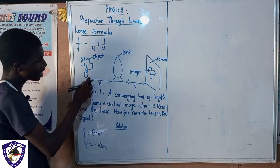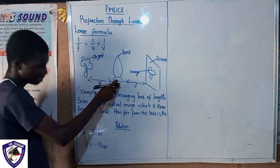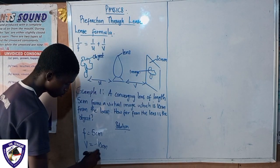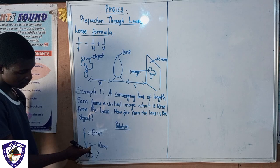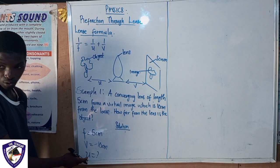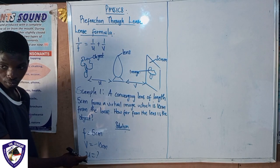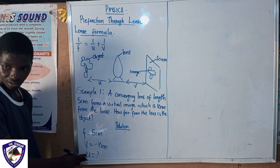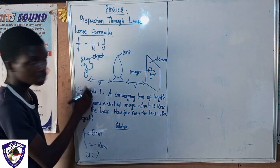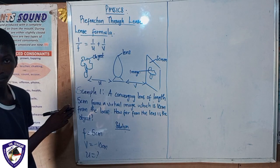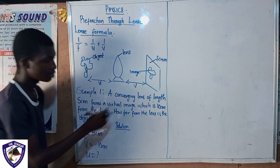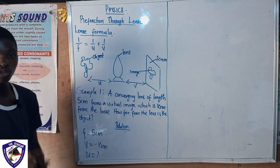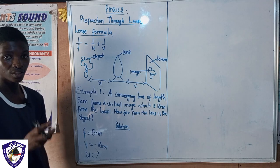We are asked to find the object distance. We are given the focal length and the image distance, and we need to find the object distance. Now, since it says the image is a virtual image, the image distance v is negative 10 centimeters.